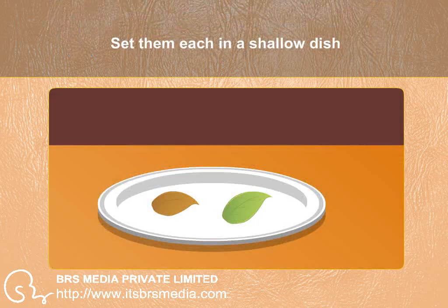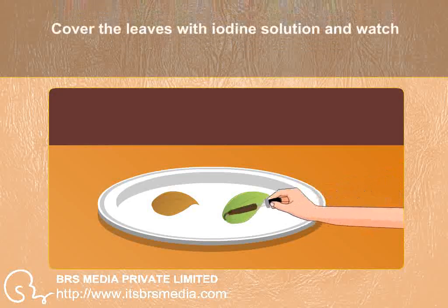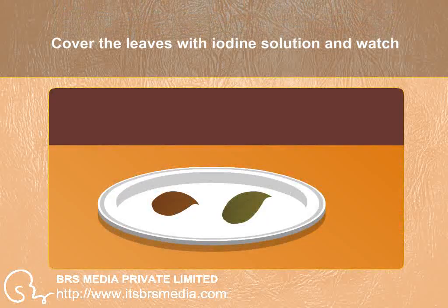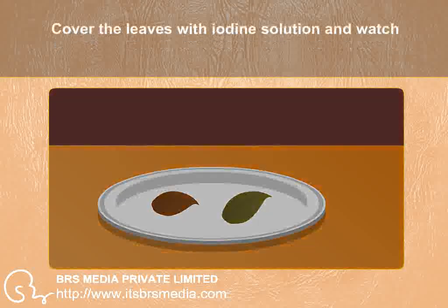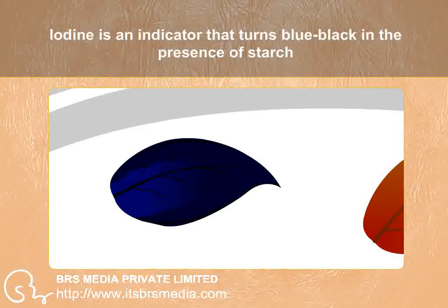Set them each in a shallow dish. Cover the leaves with iodine solution and watch. Iodine is an indicator that turns blue-black in the presence of starch.